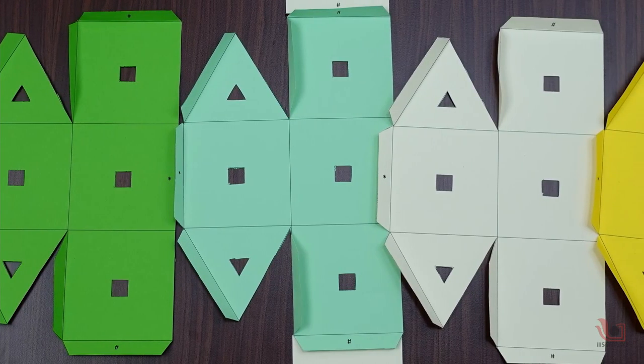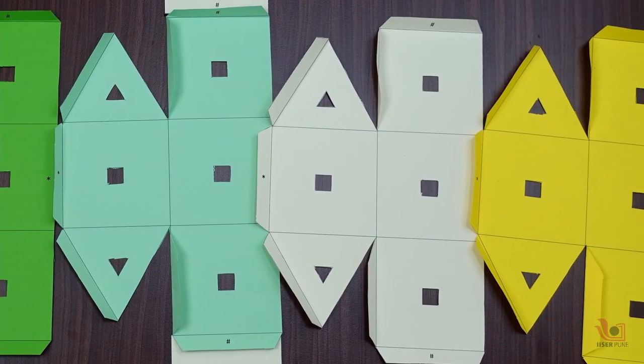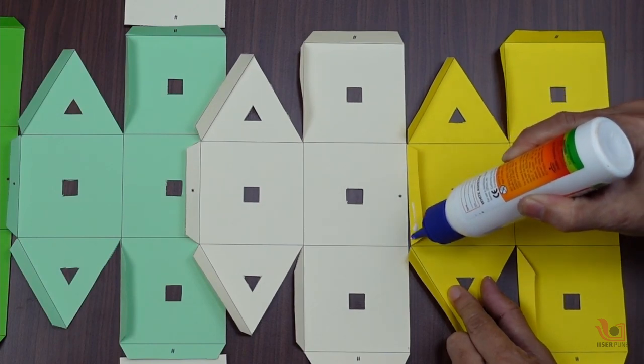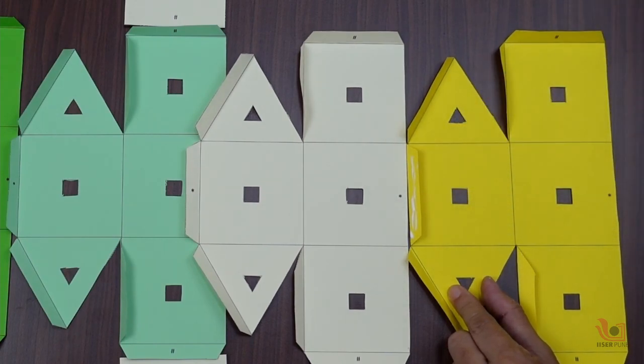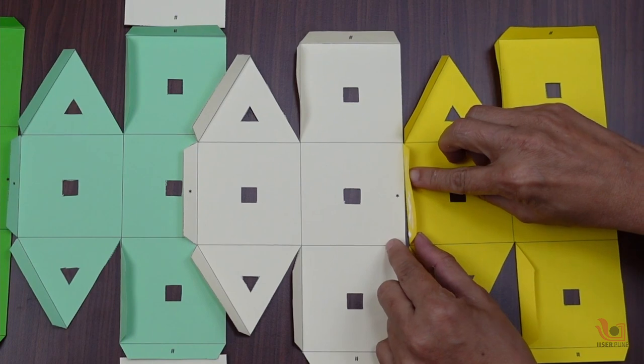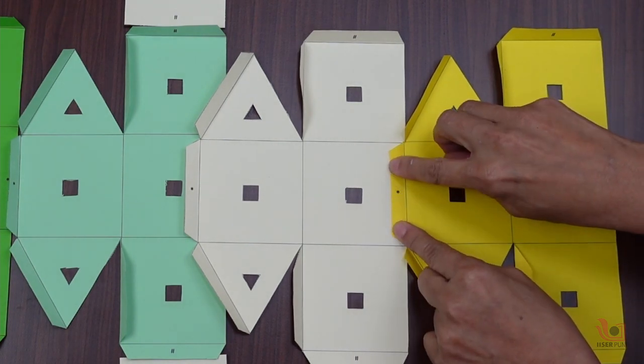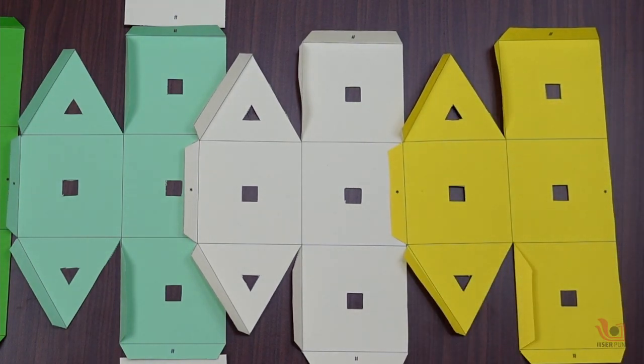Fold all the lines inside the cutout with the scale. Now, you have to connect the cutouts in such a way that while connecting, connect the flap on the paper which has star to the star, and connect the flap which has a hash to the hash.